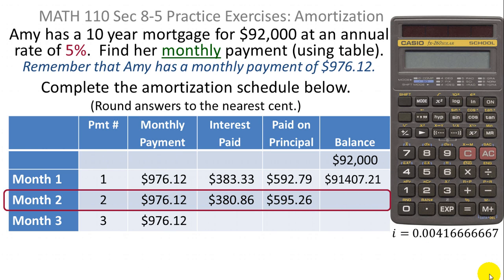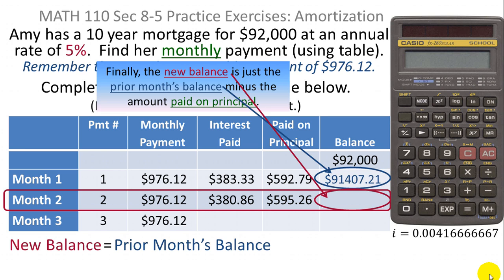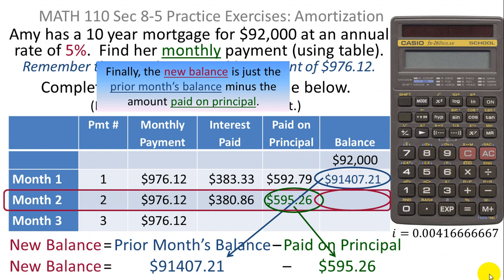Notice that the interest paid and the amount paid on principal always add up to the monthly payment. Also, as the months go on, the interest paid goes down and the amount paid on principal goes up, because you owe less each month and more of your payment goes toward principal. The balance at the end of month two is the previous balance minus the principal paid: $91,407.21 minus $595.26 equals $90,811.95.